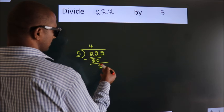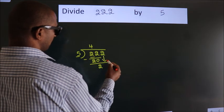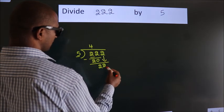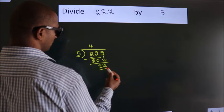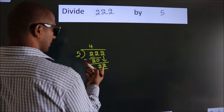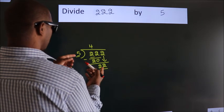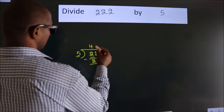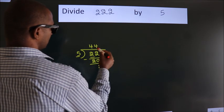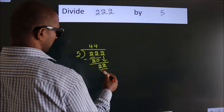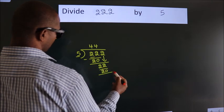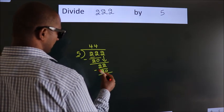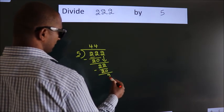After this, bring down the beside number. So 2 down, so 22. A number close to 22 in the 5 times table is 5 fours 20. Now we subtract. We get 2.